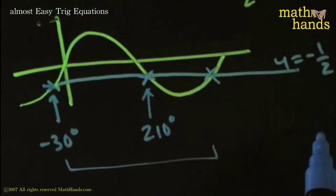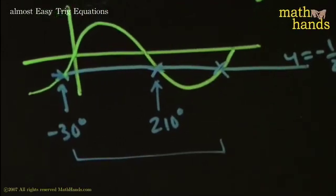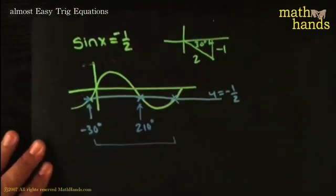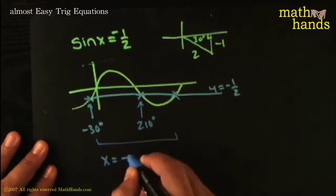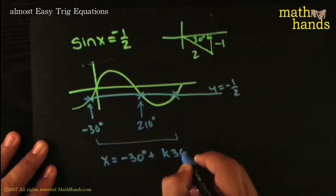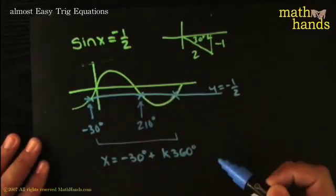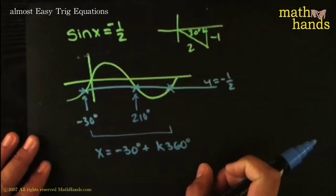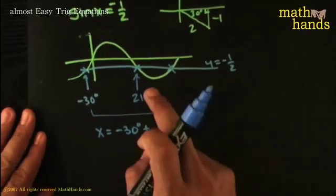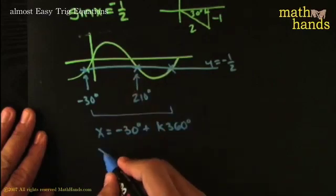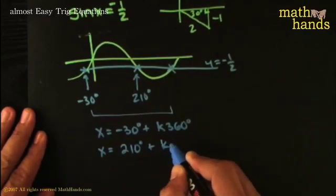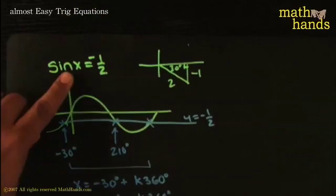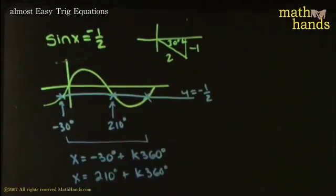So here are the solutions. The solutions could be described by saying something like this: X is equal to negative 30 degrees plus any multiple of 360 degrees, and that would give you the uphill solutions. Then the other solutions, the downhill solutions, would be given by X equals 210 degrees plus multiples of 360 degrees. And this would be a complete list of all possible solutions, all possible angles where sine of X equals negative one half. That's what we did last time.